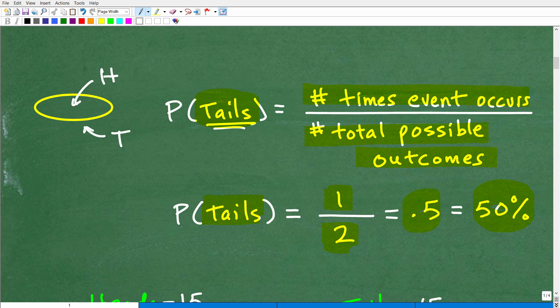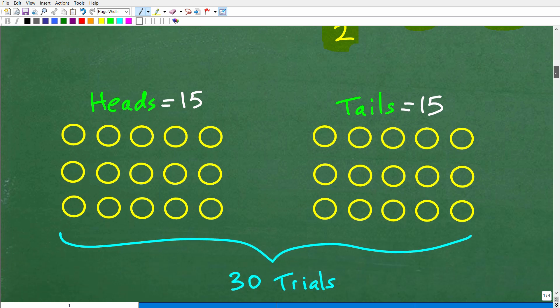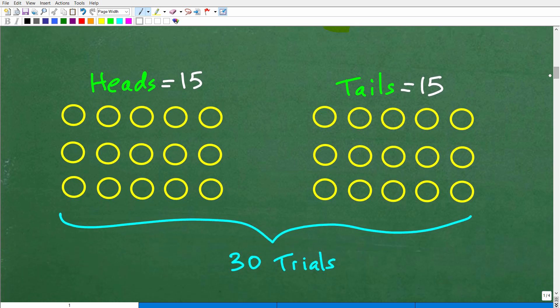So we have one over two. And in probability, we like to express the probability in terms of percent. So one-half is the same thing as 0.5 or 50%. We have a 50% expected probability that this fair coin will come up tails. Now, that's what we expect from a theoretical standpoint.